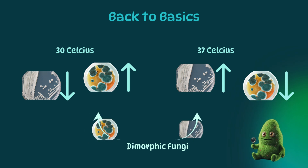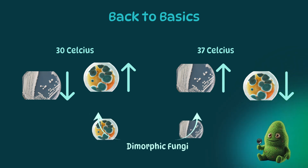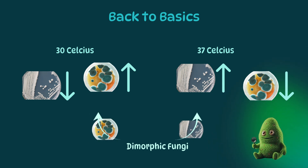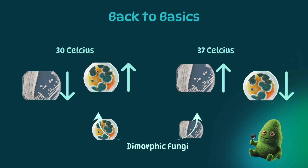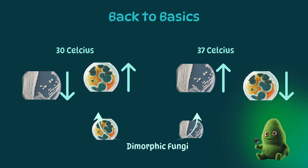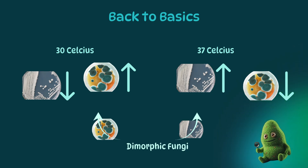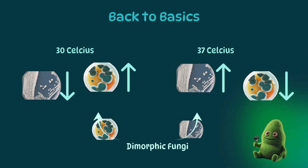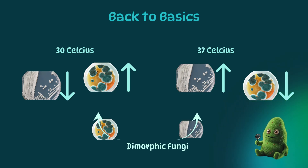Dimorphic fungi, also called systemic fungi, act like Dr. Jekyll and Mr. Hyde when incubated at different temperatures. At 37°C they appear as yeasts, and at 30°C they appear as molds, each with their own unique colony and microscopic appearance. Cool — but scary — as these are highly pathogenic.